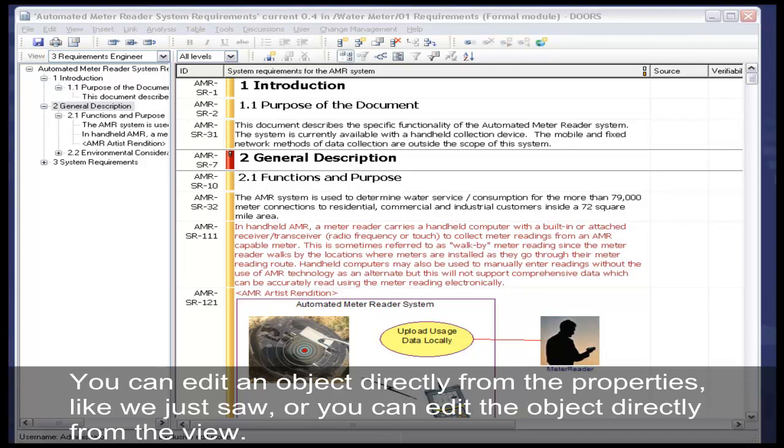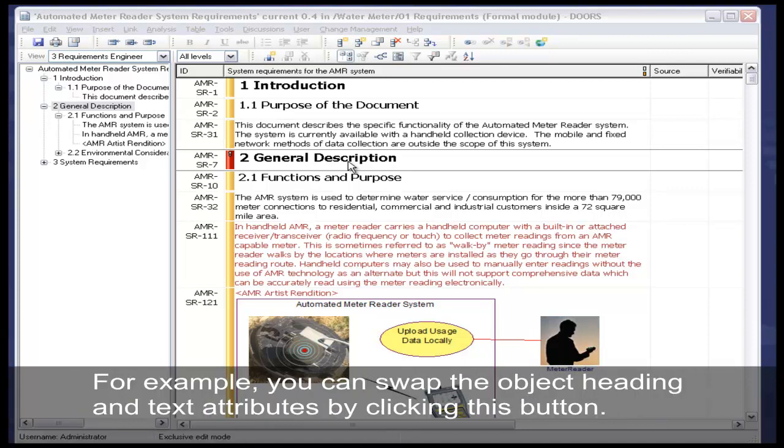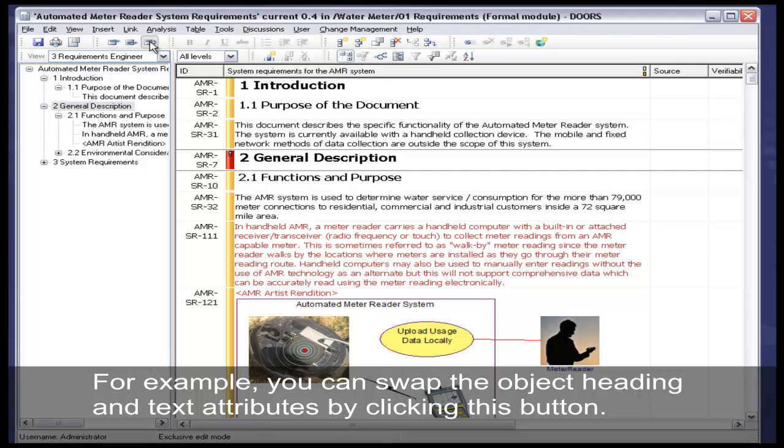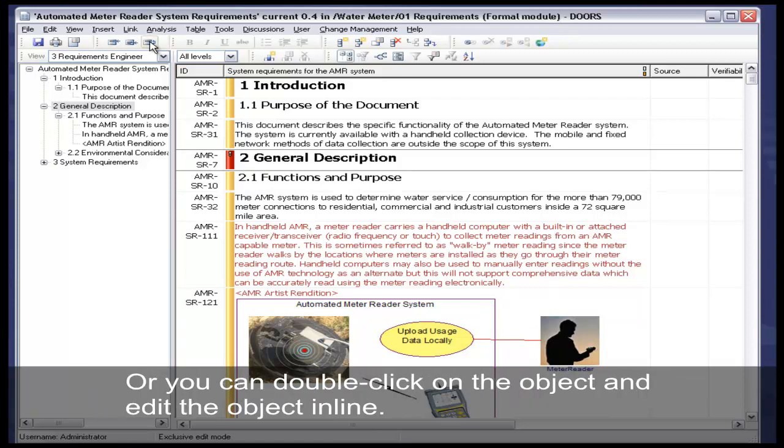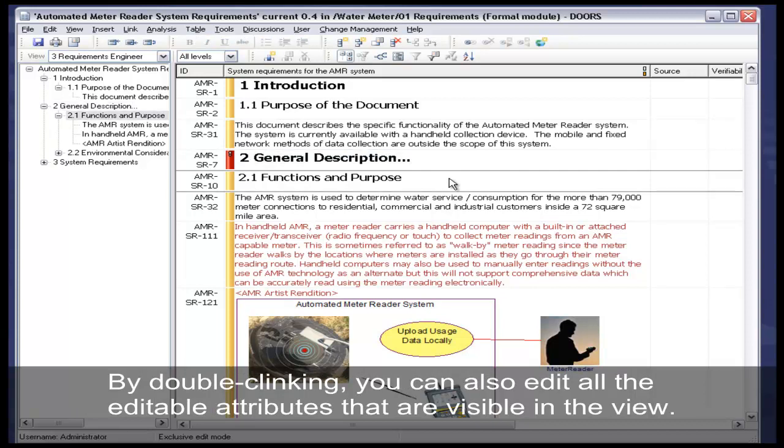You can edit an object directly from the properties, like we just saw, or you can edit the object directly from the view. For example, you can swap the object heading and text attributes by clicking this button, or you can double-click on the object and edit the object in line. By double-clicking, you can also edit all the editable attributes that are visible in the view.